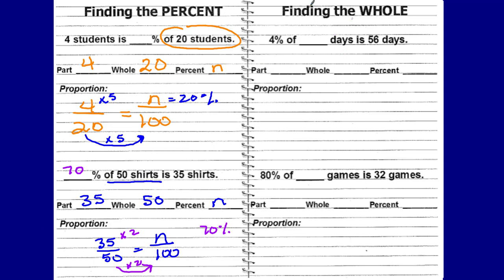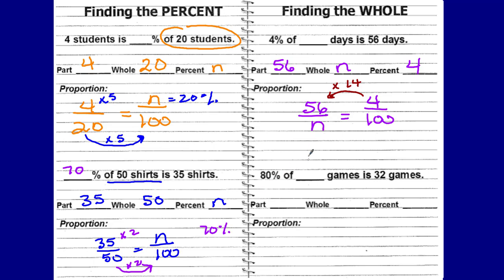Now, what would it look like finding the whole? 4% of blank days is 56 days. We already know 4% is the percent, and 56 days is your part. Remember, the part and the percent should represent the same thing — we're looking for how many total days, which is the whole. Set up the proportion: part to whole, 56 to n, is equal to 4 out of 100. Can we do a scale factor? Yes — 4 times 14 gives you 56, so multiply 100 by 14, and you get 1,400. So 4% of 1,400 days is 56 days.